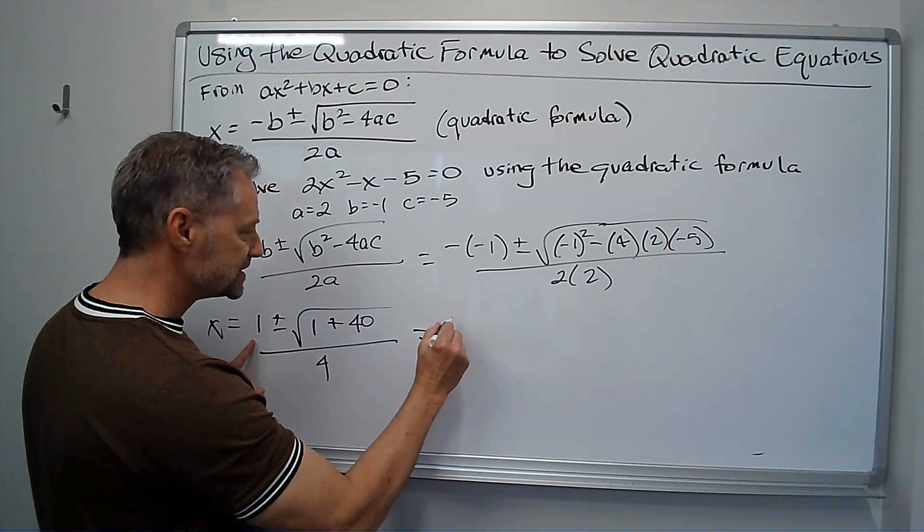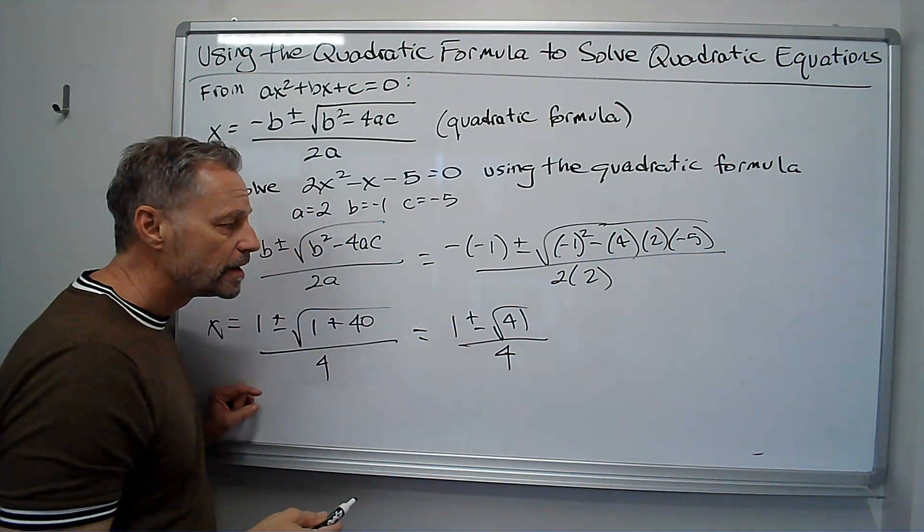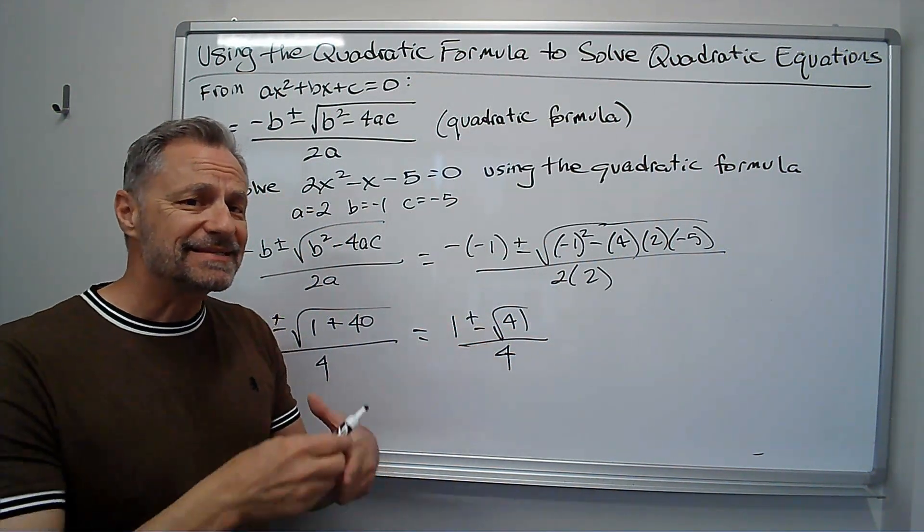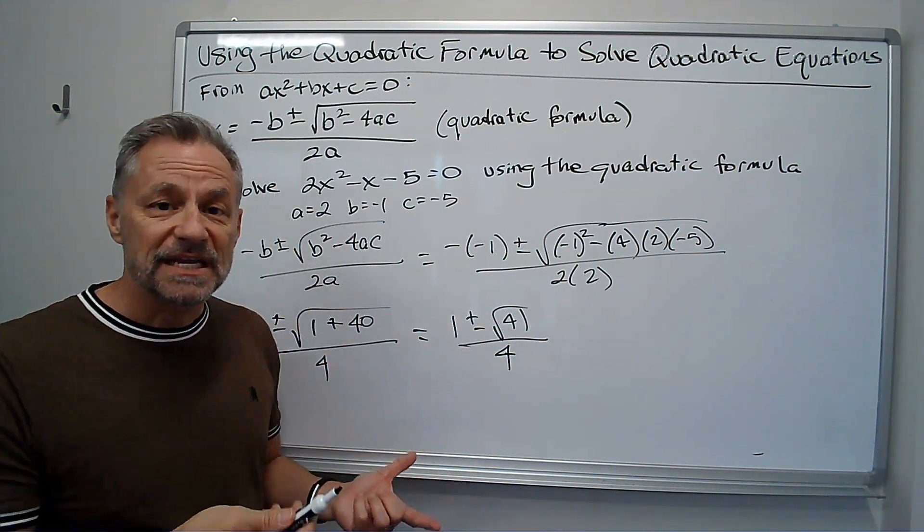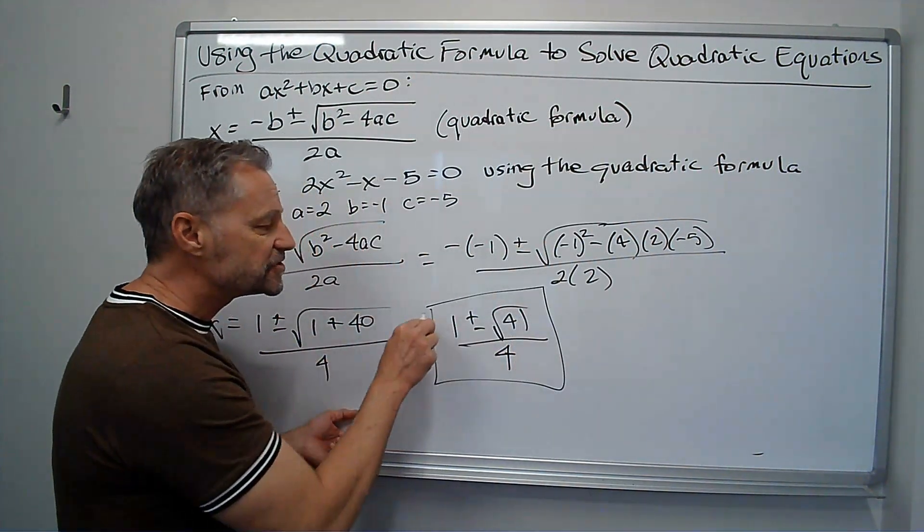And now I go to the next step. 1 plus or minus the square root of 41 over 4. That can't be simplified. That's not a nice thing to simplify. It's not a perfect square, and there's no perfect squares I can take out. So I'm going to box the answer and leave it that way.